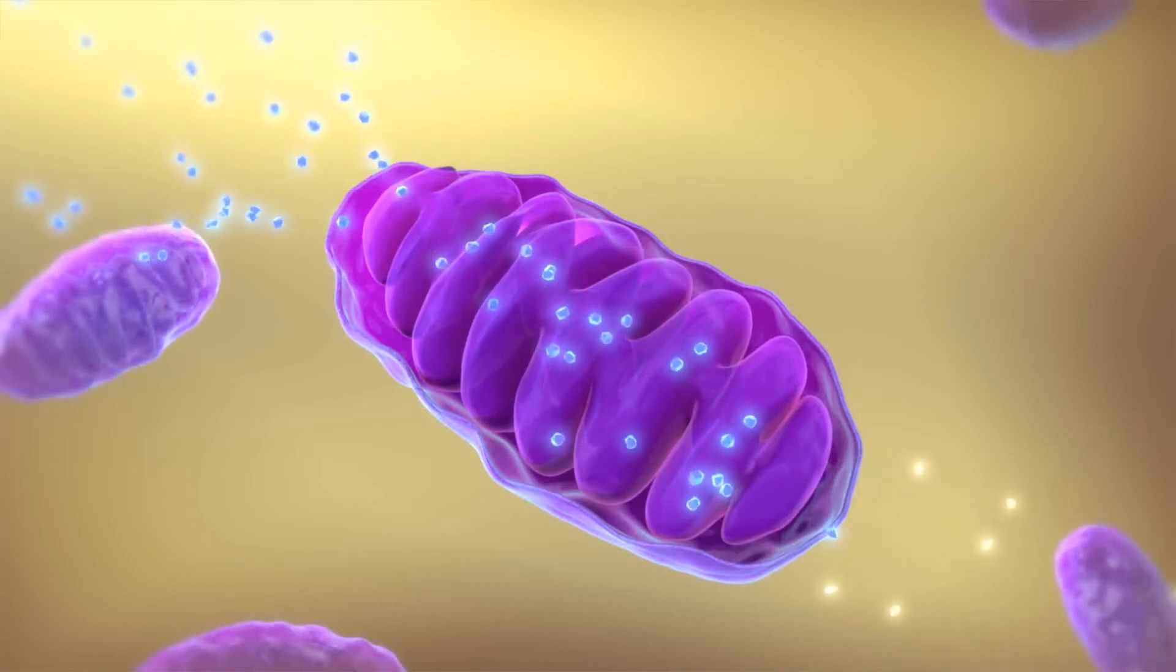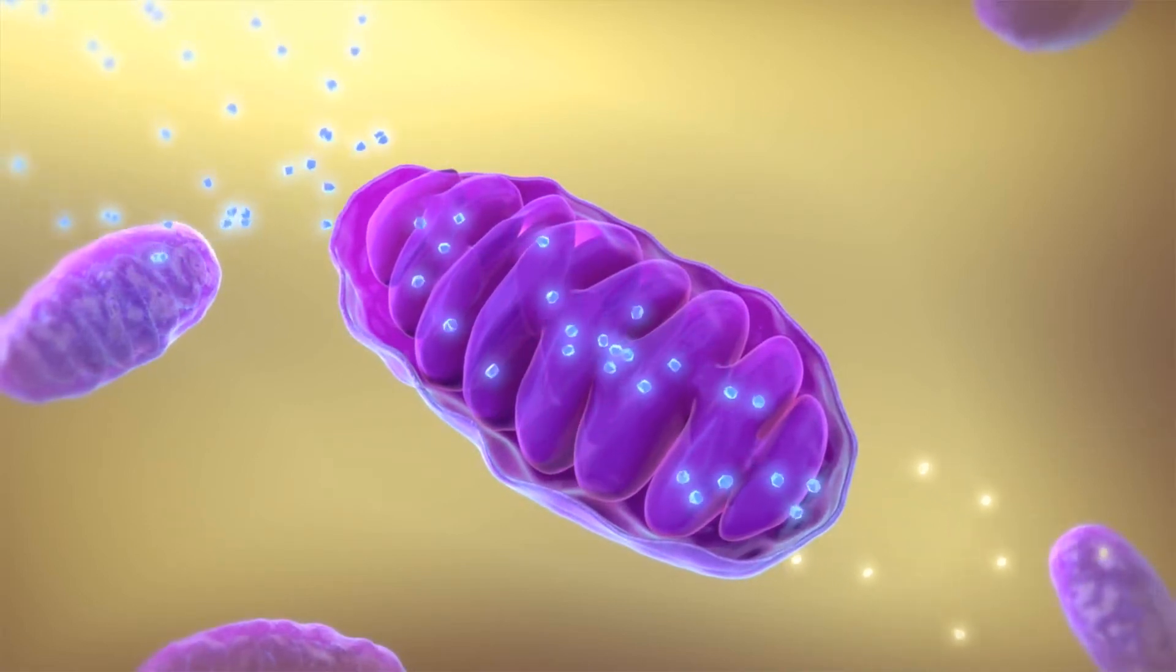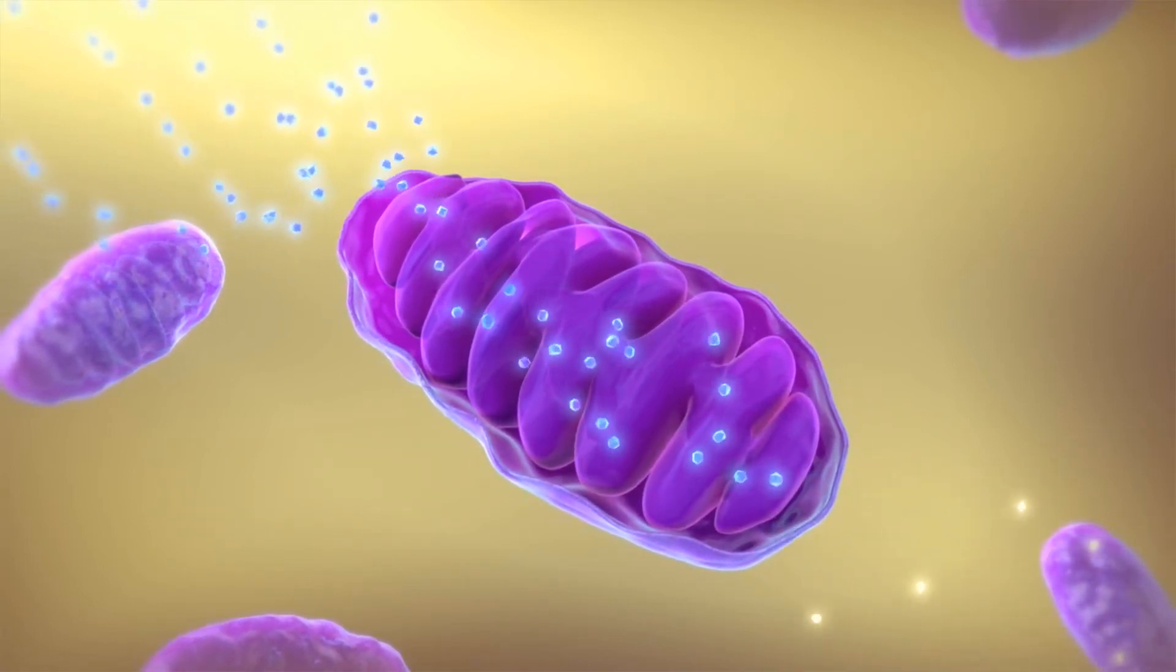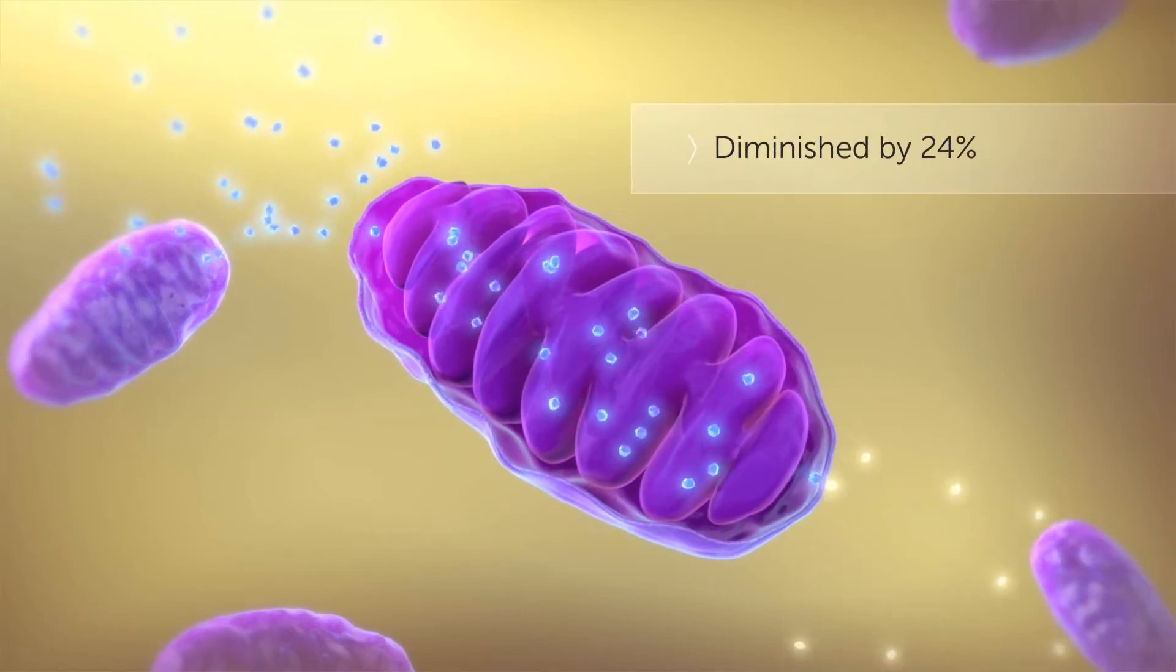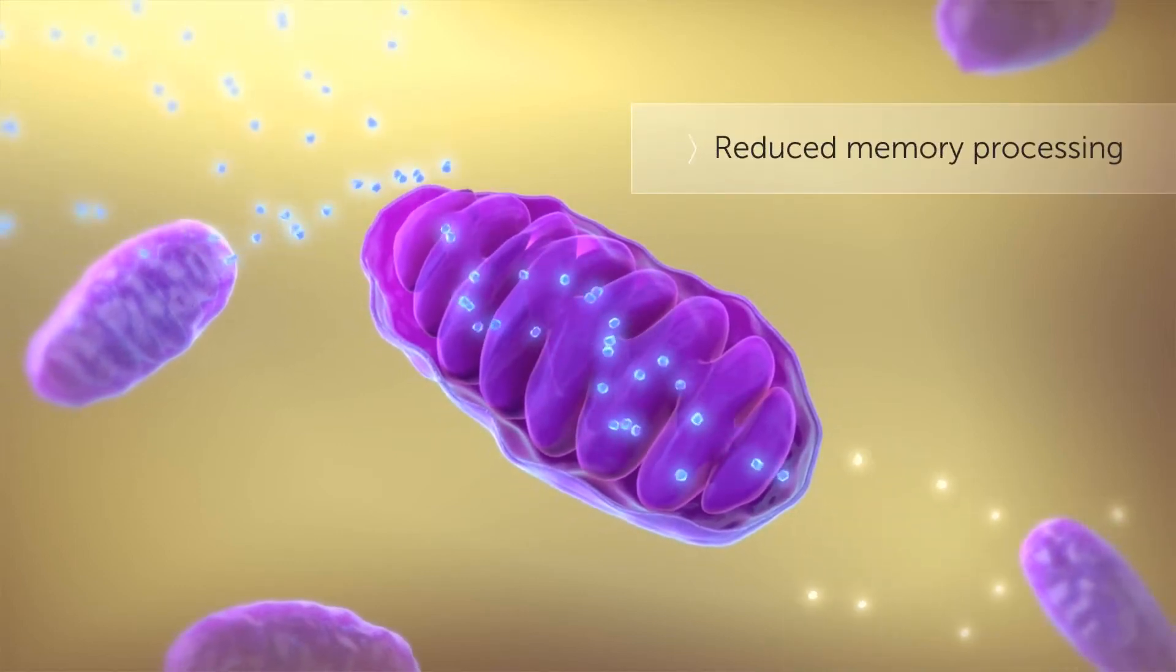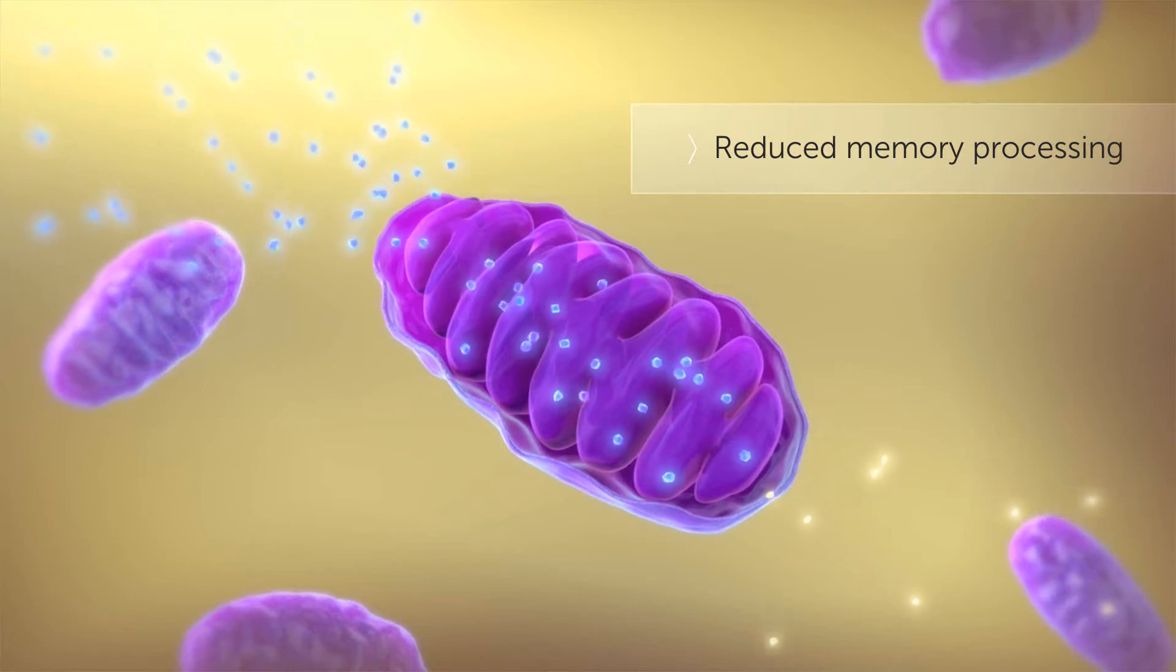In Alzheimer's disease, the ability of mitochondria to utilize glucose for fuel is diminished by up to 24%, particularly in areas of the brain involved in memory processing.